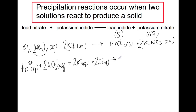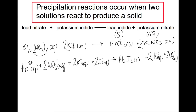Our solid PbI₂ we're not going to split up because it is a solid. On the products side we have two K+ aqueous, and the 2 also multiplies the nitrate. Now we go along and see which are completely identical: Pb²+ aqueous becomes Pb²+ solid so that one has changed. 2NO₃⁻ aqueous has not changed on either side so we score that out as a spectator ion. 2K+ aqueous and 2K+ aqueous are also identical so we score those out. The red ones are spectators.